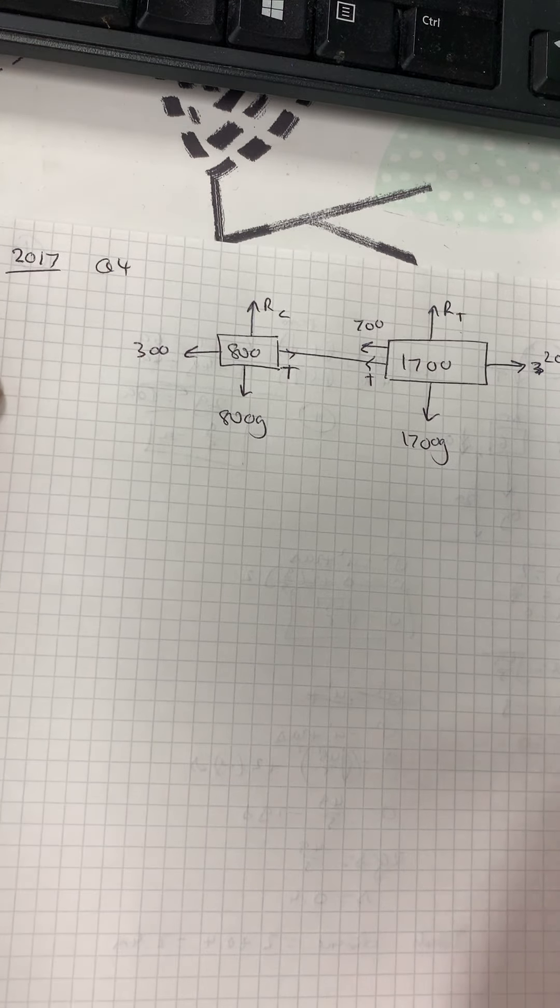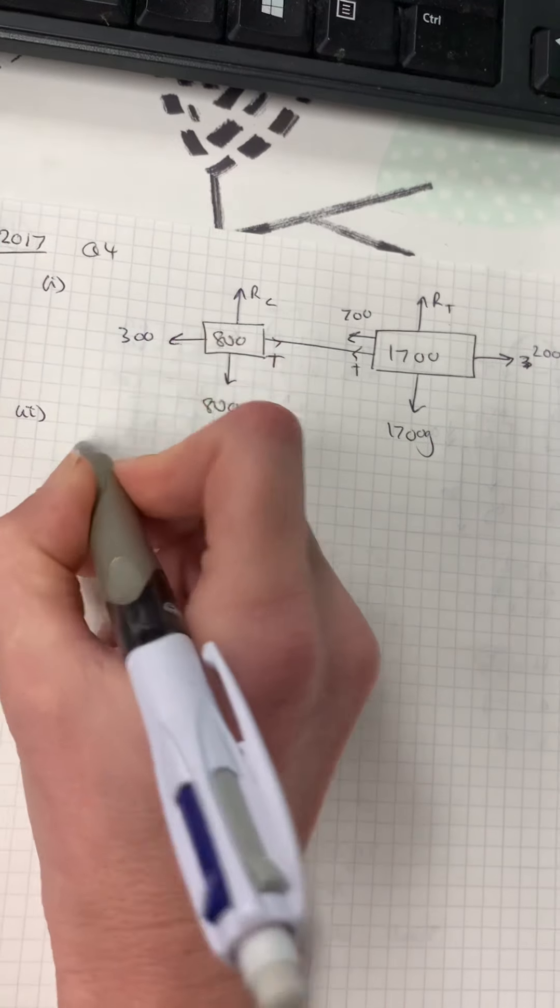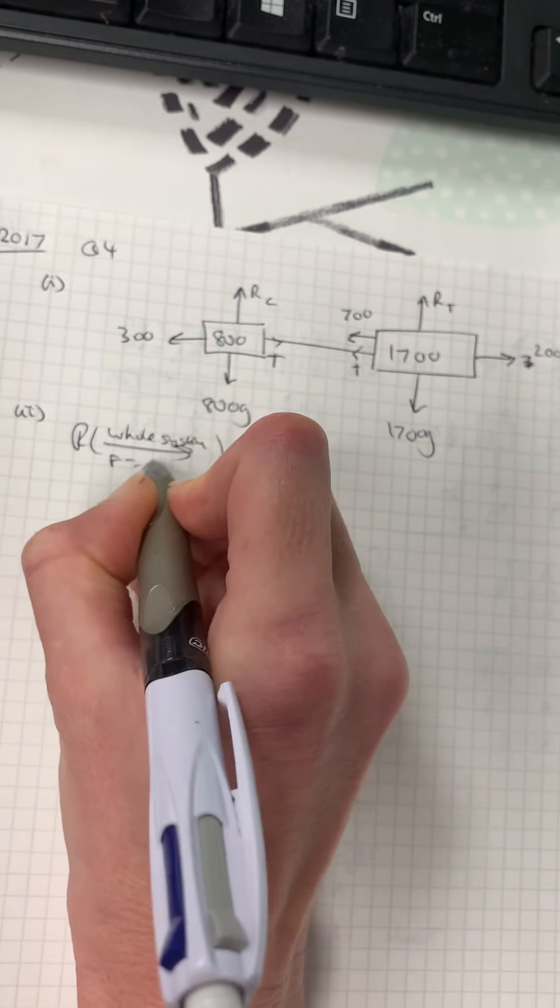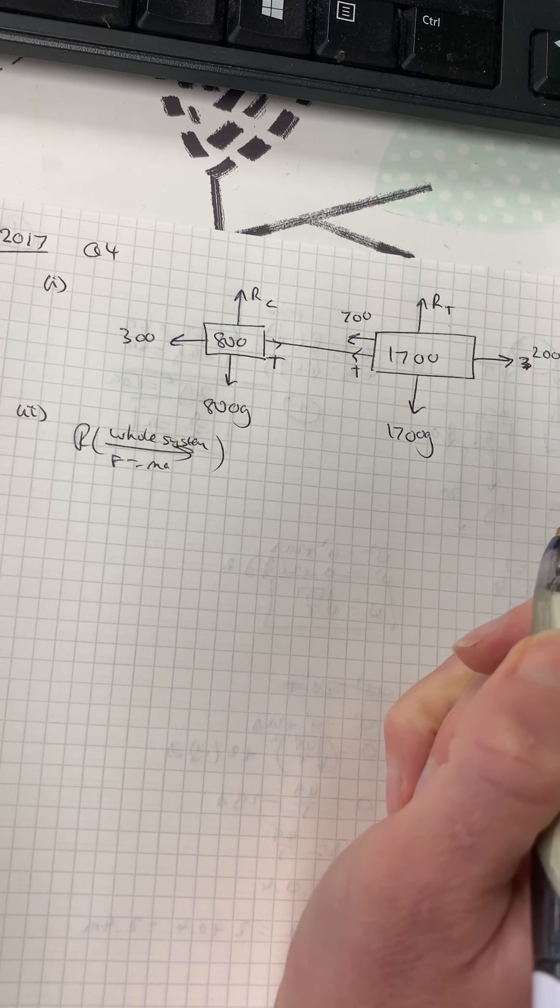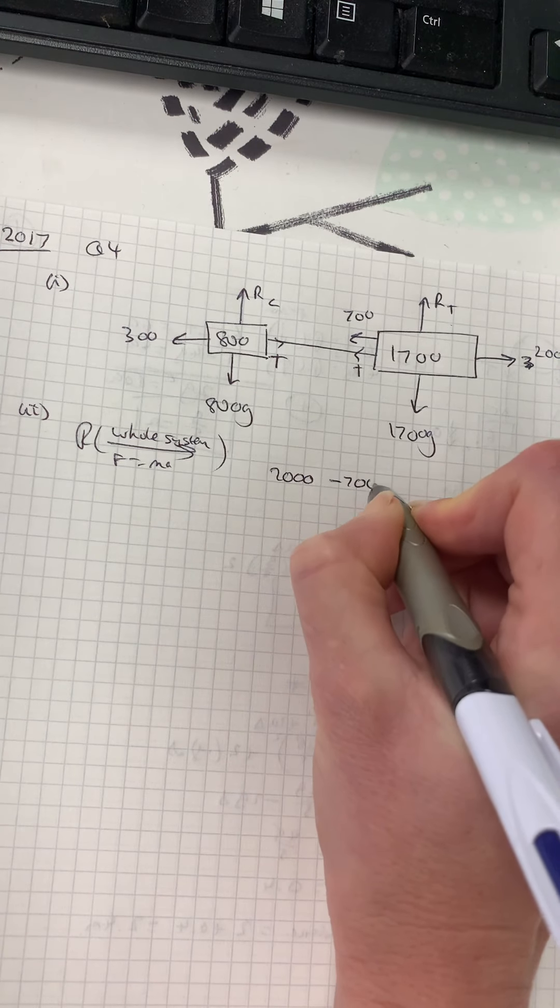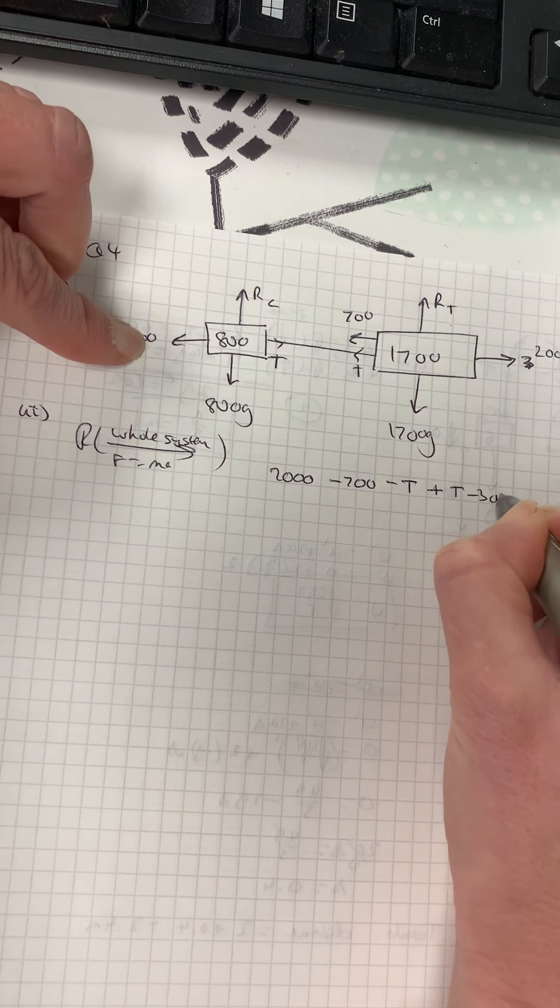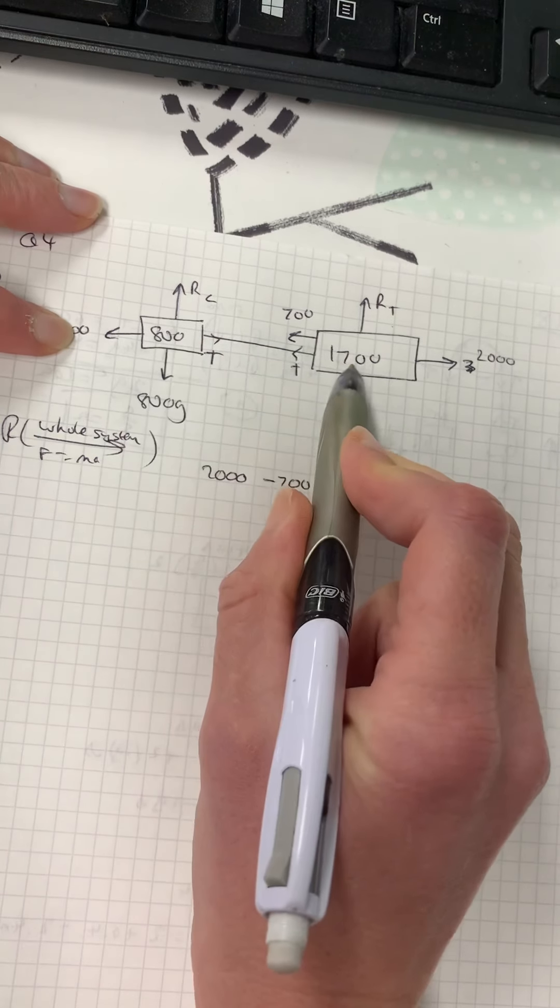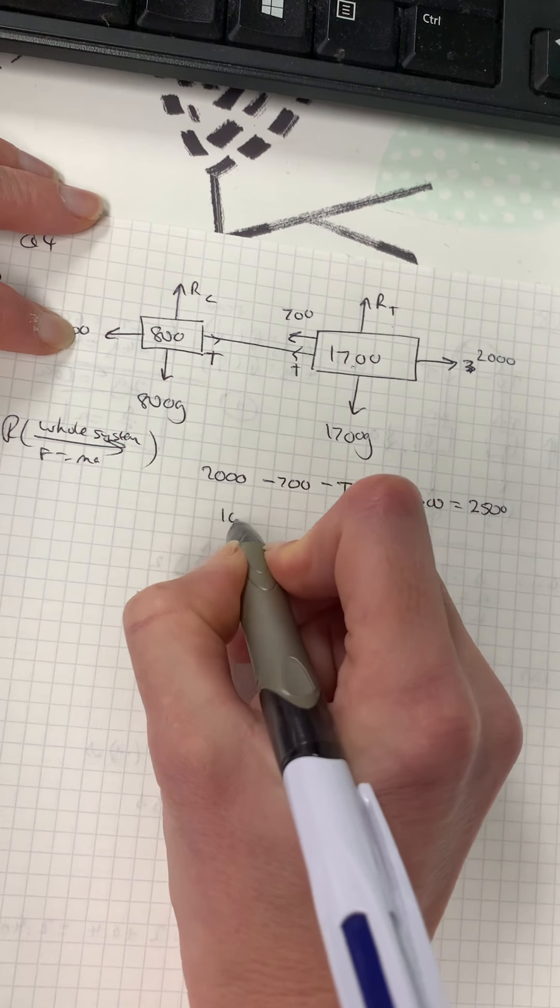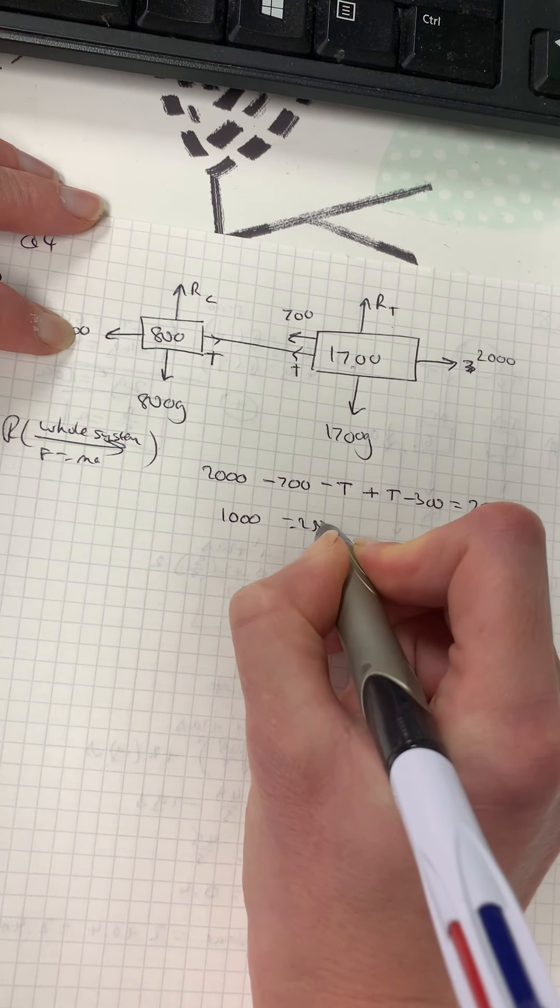Okay, part two. For part two, I am going to resolve the whole system using F equals MA. So if I resolve the whole system, I have got 2000 pulling it forward, 700 pulling it back, minus T pulling it back, T going forward, 300 coming back, equals—now the total mass is these two together. So it's going to be 2500. And if you work that out, you get 1000 equals 2500A.